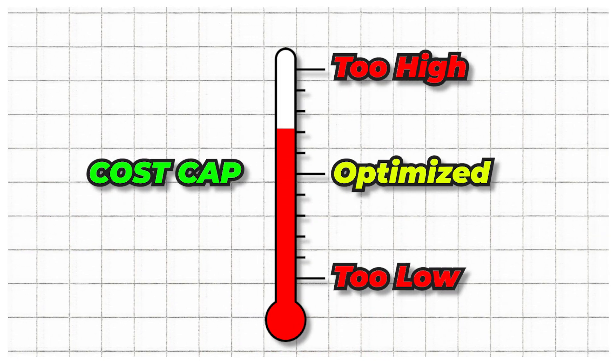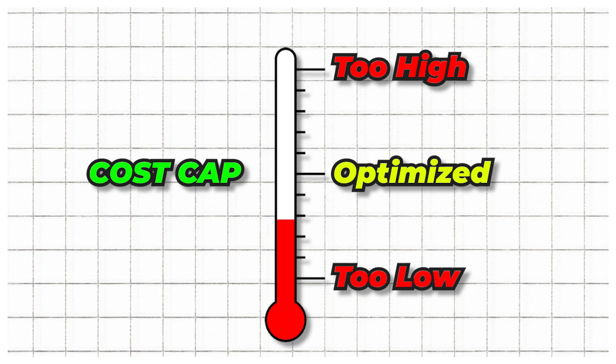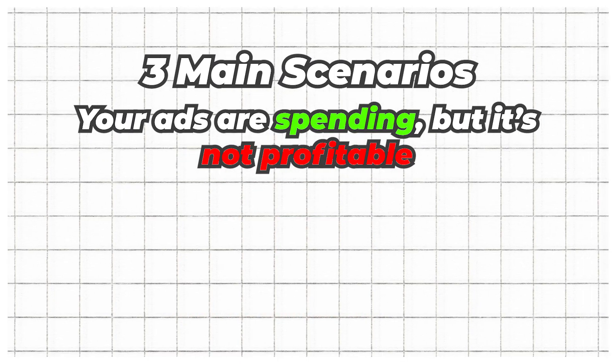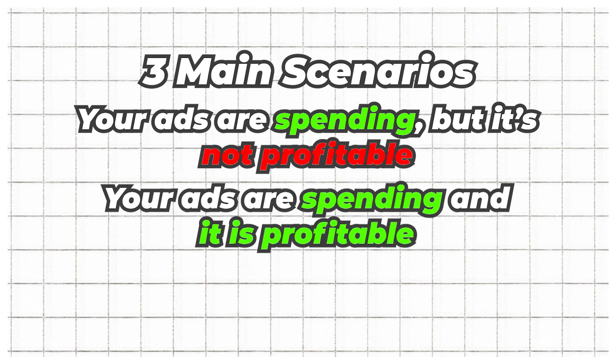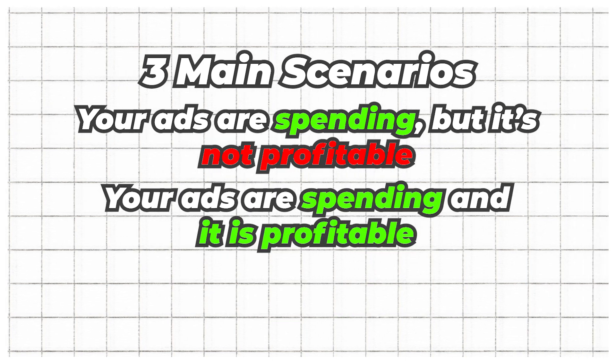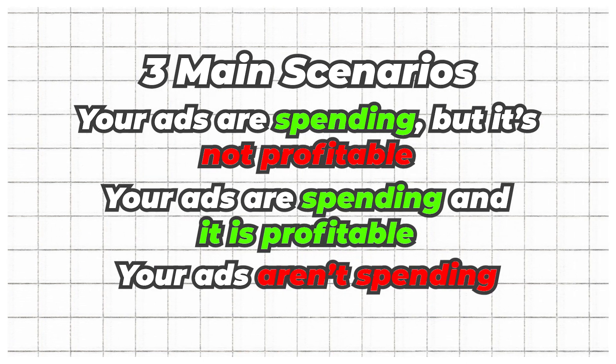So the $15 in this example is just our starting point, but we'll need to either adjust the cost caps up or down based on how performance is going. And there are three main scenarios that you're going to encounter: your ads are spending but it's not profitable, your ads are spending and it's profitable, or your ads just aren't spending. But before we talk about how to make adjustments from these scenarios, we need to know whether or not your ads are profitable.